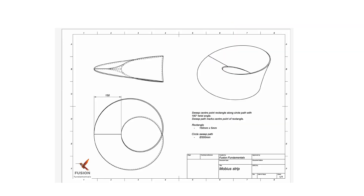Hello and welcome to Fusion Fundamentals with me, MJ. Today we're going to be taking a look at how to draw this simple Möbius strip. It's a bit of a strange object — it's only got one surface, so as you move around it the back becomes the front and then returns to the front. It's only one surface.